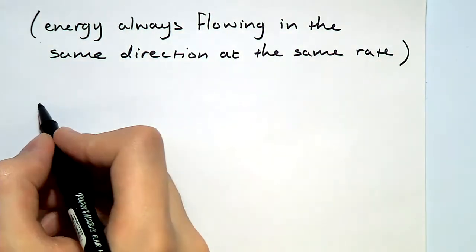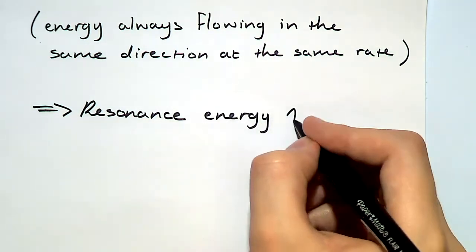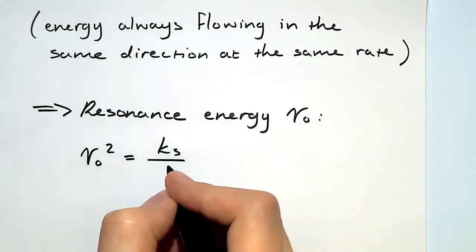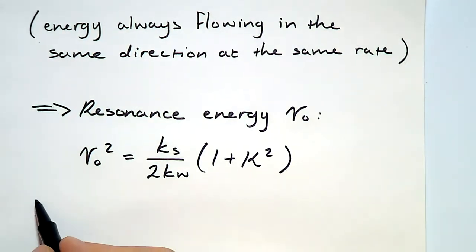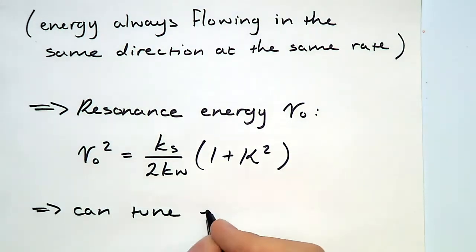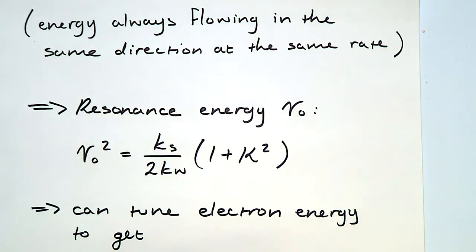We can use this to obtain an expression for the resonance energy, or the resonance wavelength of the electromagnetic field, in terms of the energy of the electrons in the accelerator and the periodicity of the wiggler. So we can essentially tune the electron energy to get radiation at the desired frequency.